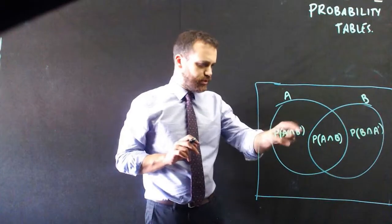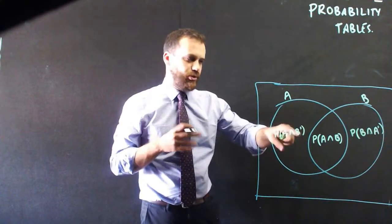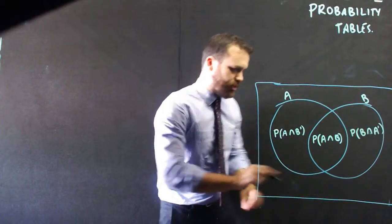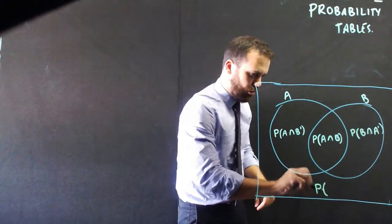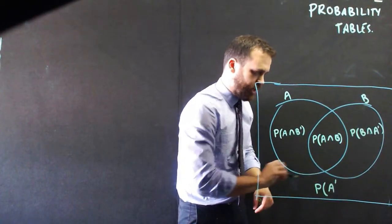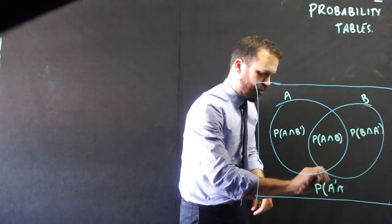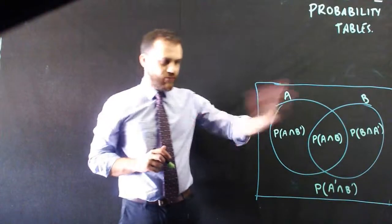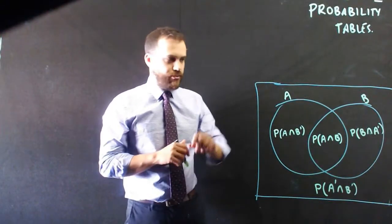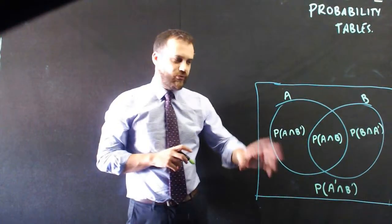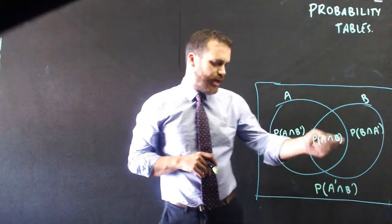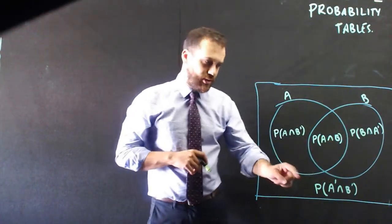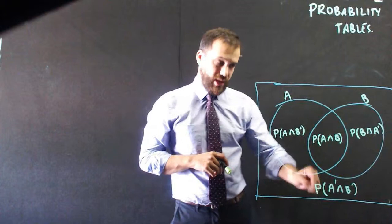These little dashes mean 'didn't happen' or 'not happen.' Finally, the outside region is the probability of A not happening and B not happening. So there is a Venn diagram — we've probably never seen it quite that way before, but that's what it means: A and B, A and not B, B and not A, and not A and not B.